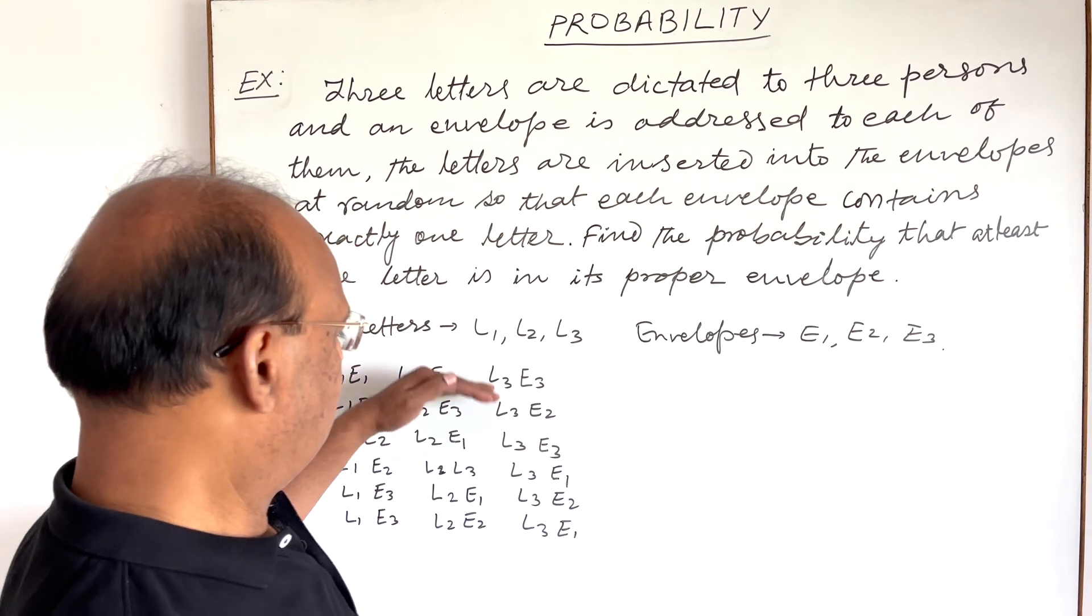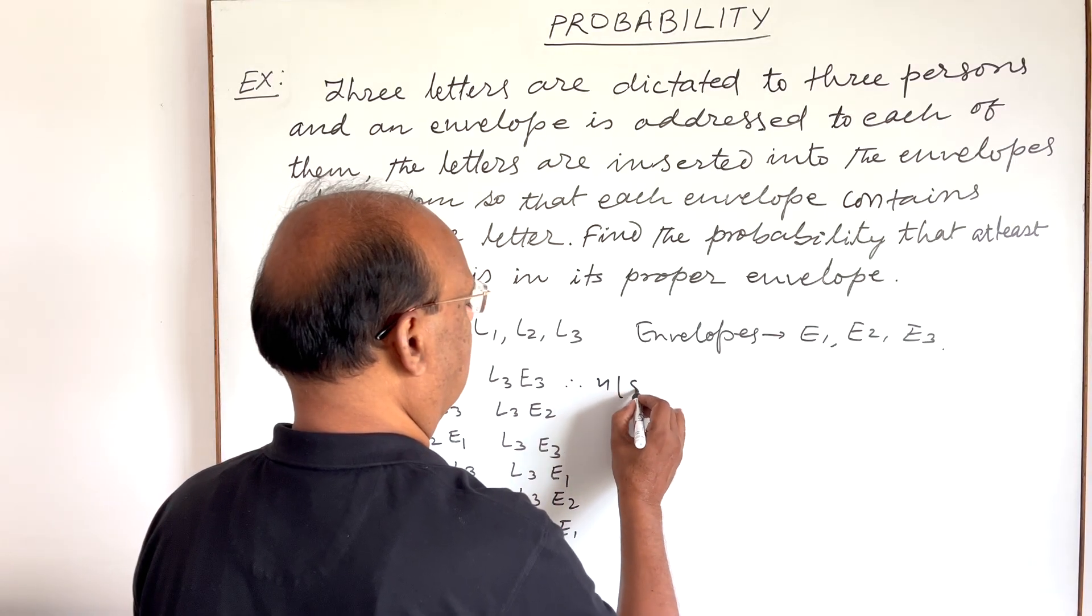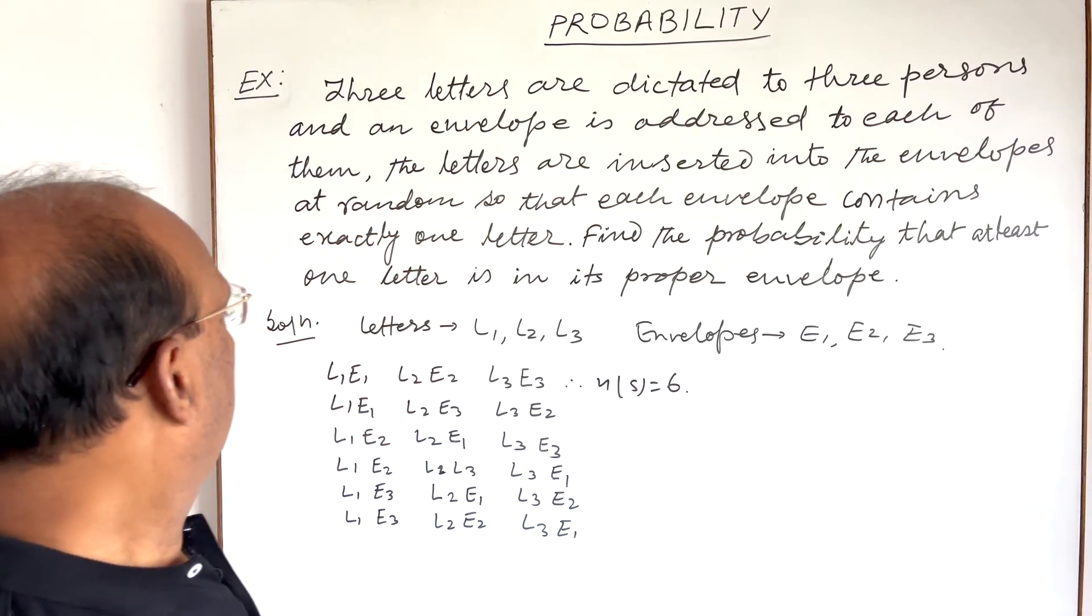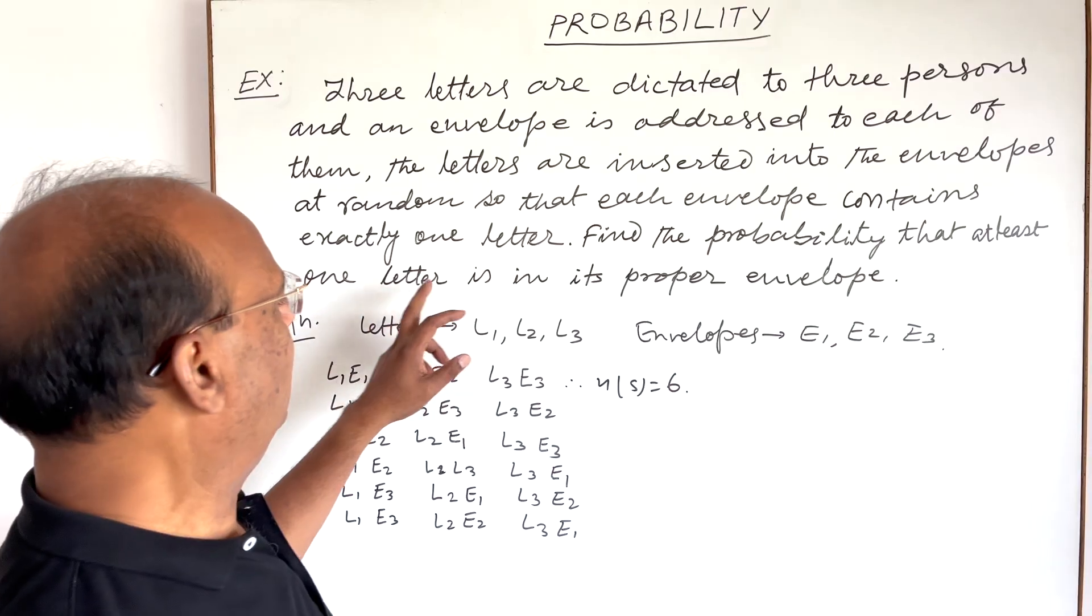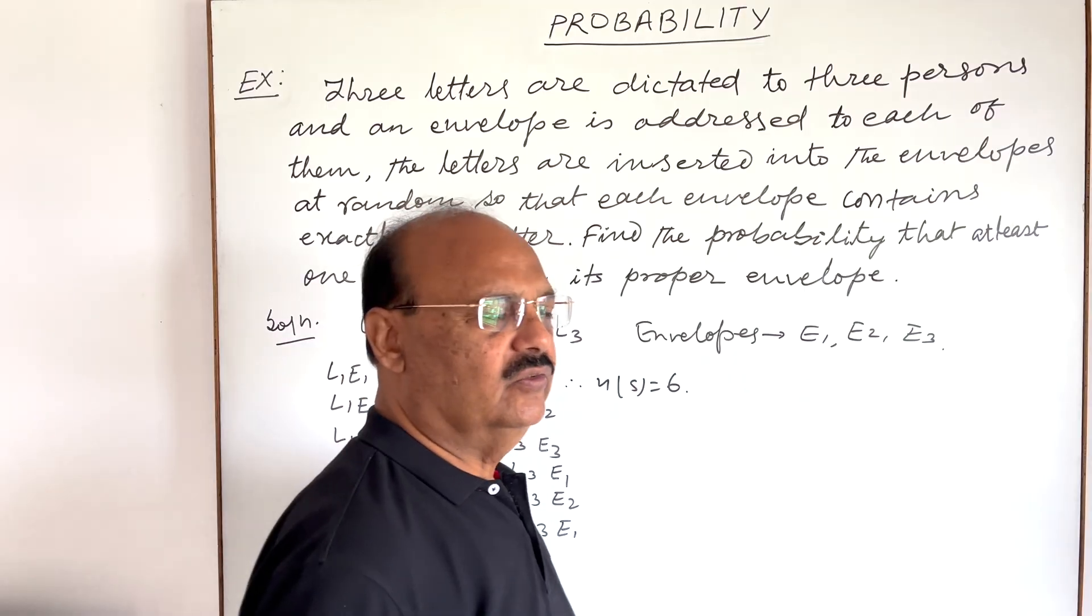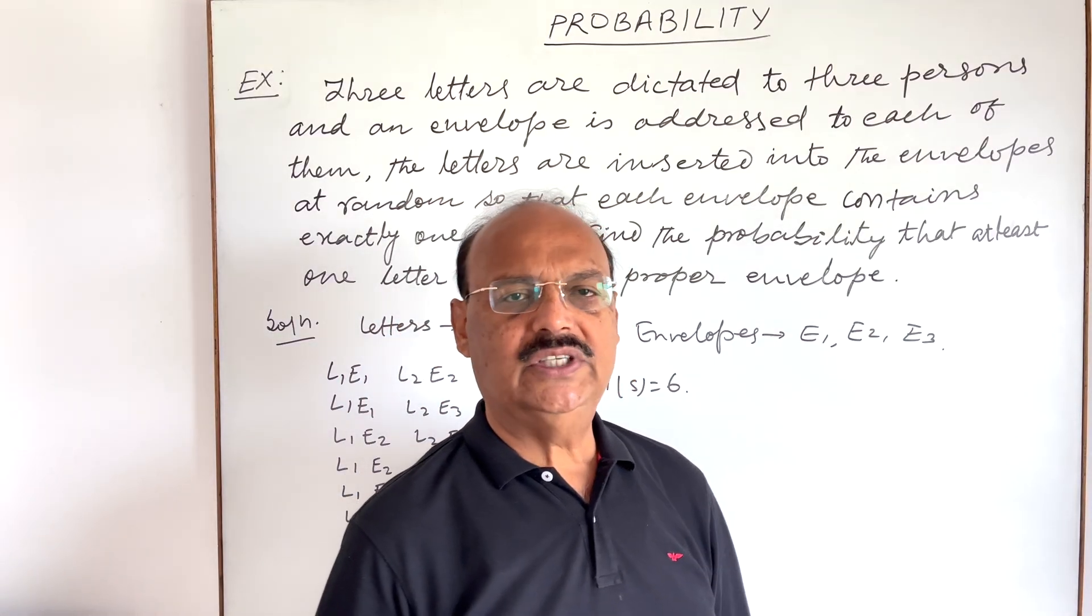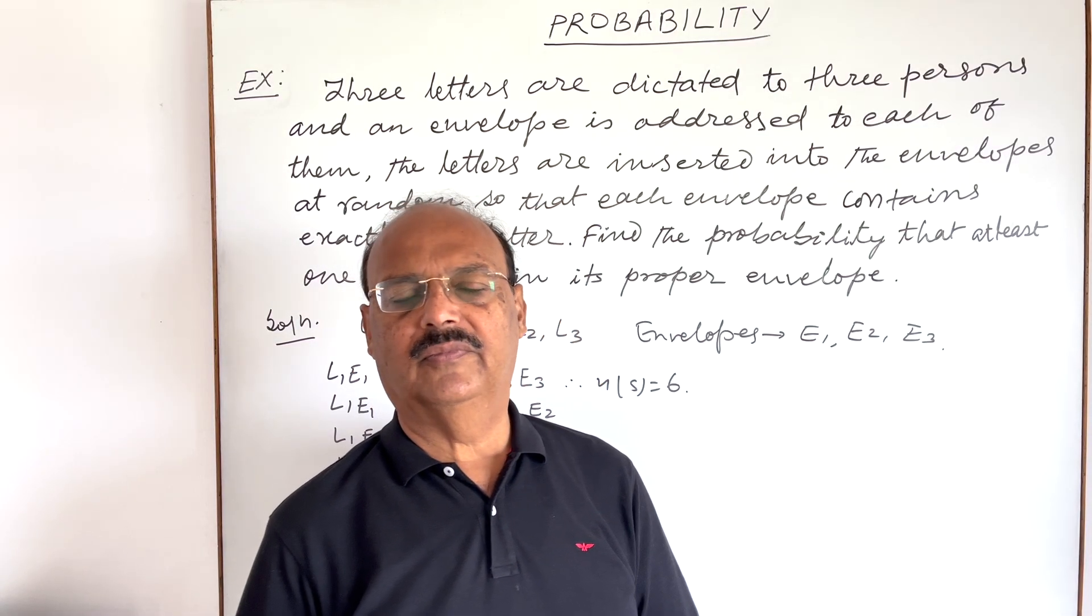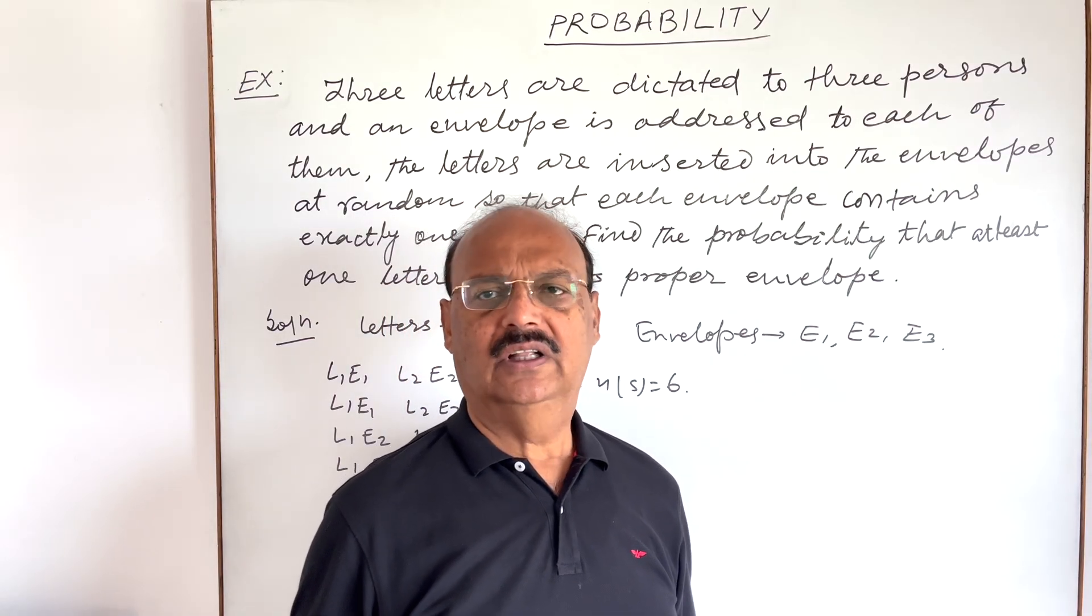These six combinations give us the value of n(S), the sample space. So n(S) equals 6. The question asks to find the probability that at least one letter is in its proper envelope. This means we need to reject only those cases in which all letters are inserted in wrong envelopes.